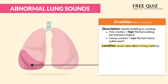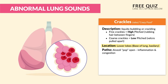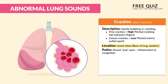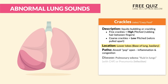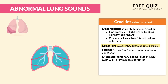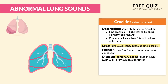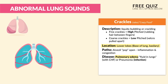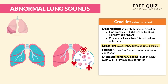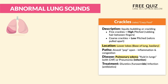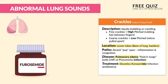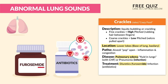The location of crackles is typically in the lower lobes or the base of the lungs, also called basilar. The pathophysiology is the alveoli popping open from inflammation and congestion. The disease process is typical for pulmonary edema — fluid in the lungs as with heart failure patients (CHF) — or pneumonia, where there is deep infection inside the lungs. Treatment includes diuretics like furosemide for heart failure with pulmonary edema, and antibiotics for infection like pneumonia.